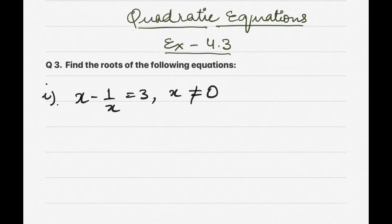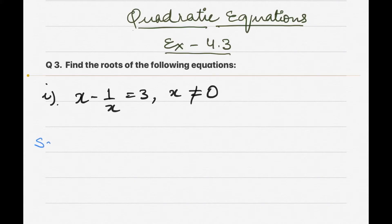Question 3 says: find the roots of the following equations. The first equation is x minus 1/x = 3, where x is not equal to 0. They write this because if x were 0, we would get 1/0, which would be an imaginary number. That's why when something is in the denominator, we specify it's not equal to 0.